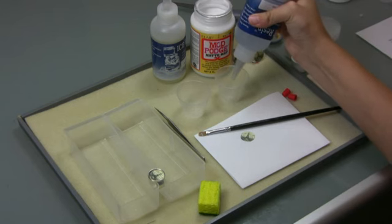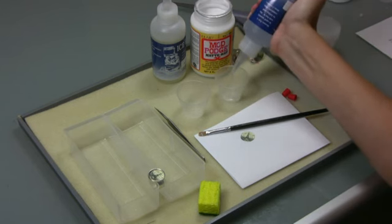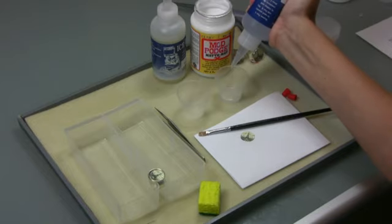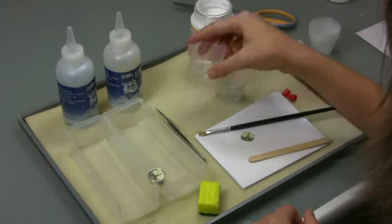It is important to have exactly equal proportions of the resin and the hardener in order for it to cure properly, which is why we use two mixing cups. Pour the Part B hardener into the Part A resin.